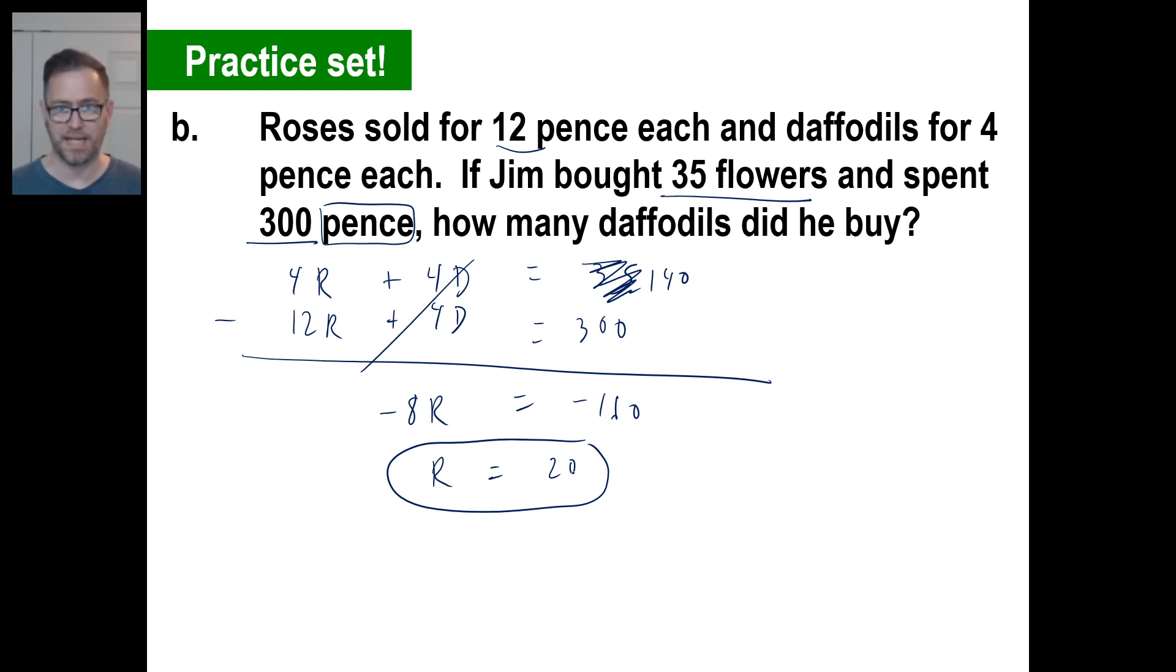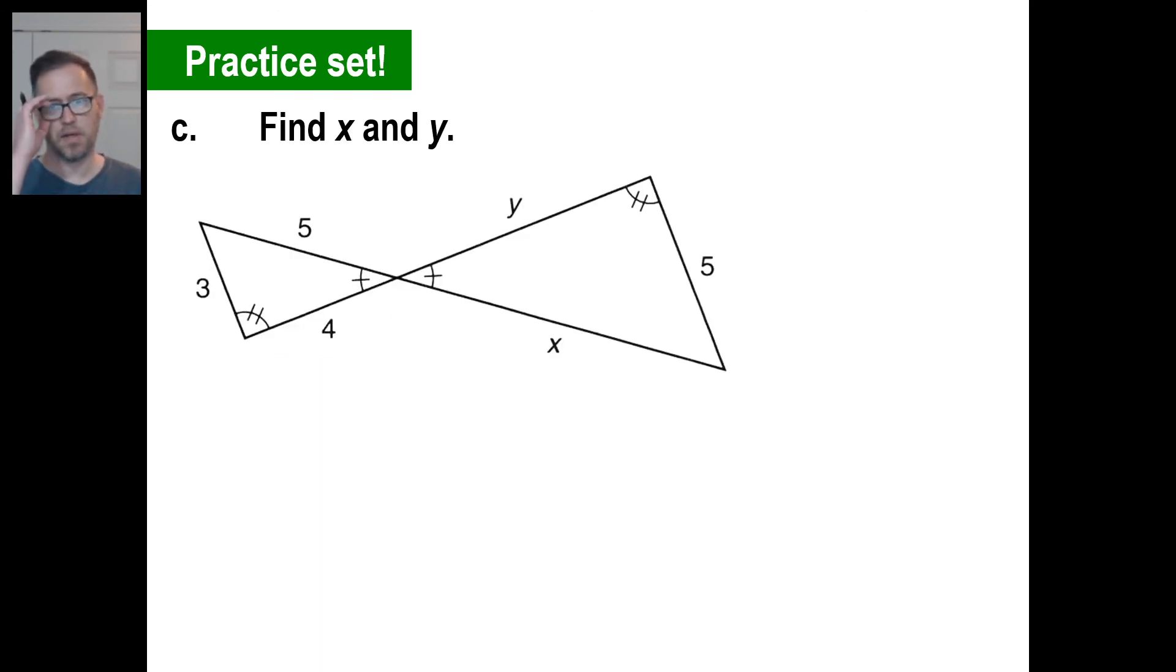The roses, there are 20 of them. He bought 35 flowers total. That tells us there have to be 15 daffodils. There you go. That's all there is to it. Go ahead and practice, or excuse me, pause it and try C and then come back in a second.